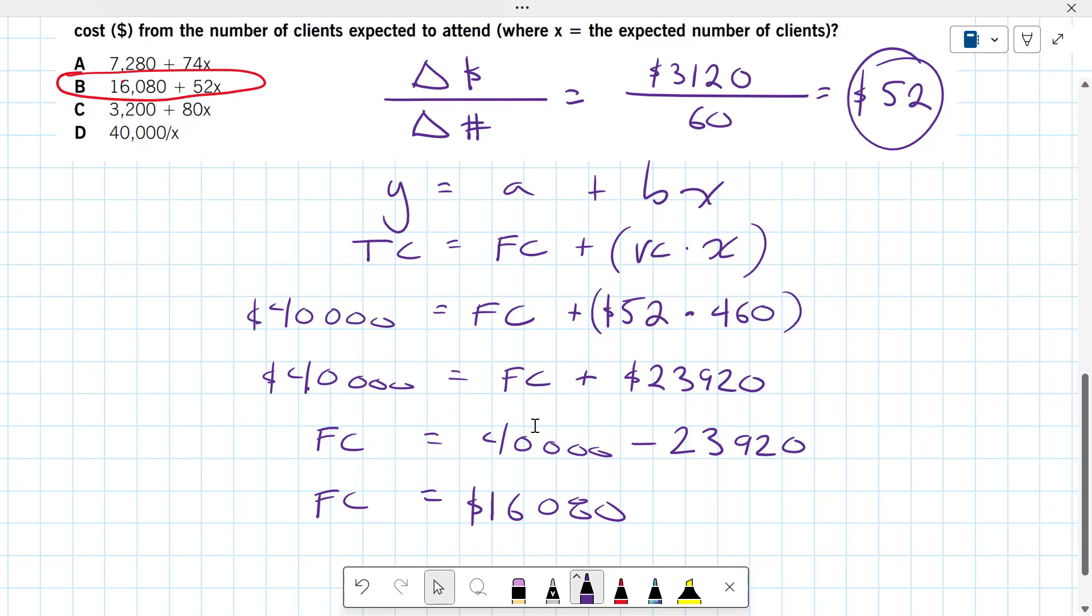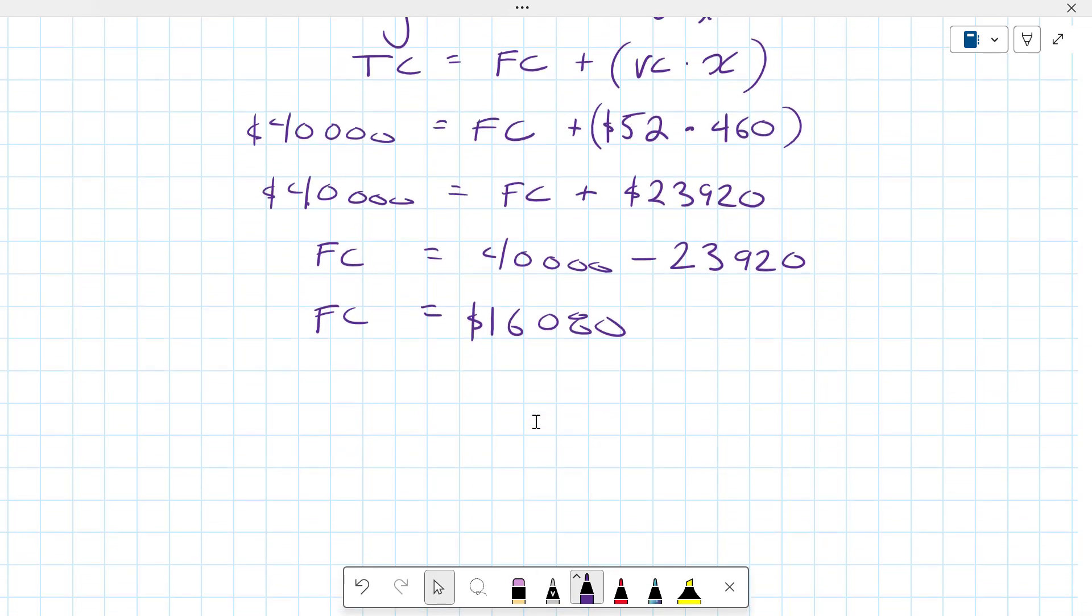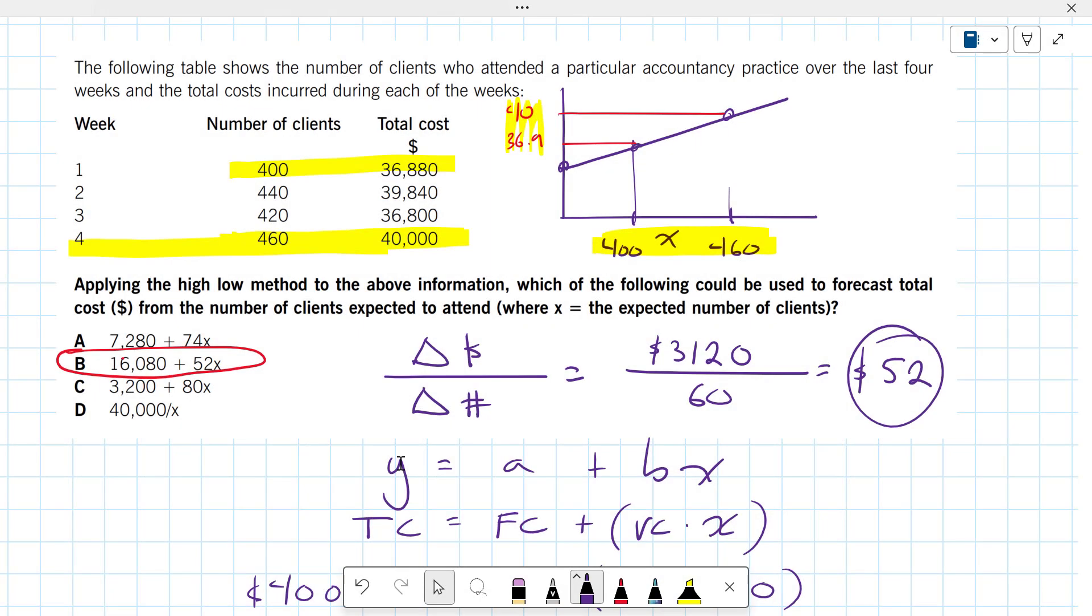Just to recap what we've done. We now know that the total cost for this company is equal to the 16... oh wait, those are the fixed costs, the overhead, the rent, the salaries, plus the variable cost of $52 multiplied by the number of clients. So that's how linear equations work in a past management accounting type of exam, when we use the linear equations to help us calculate the total cost for a business.